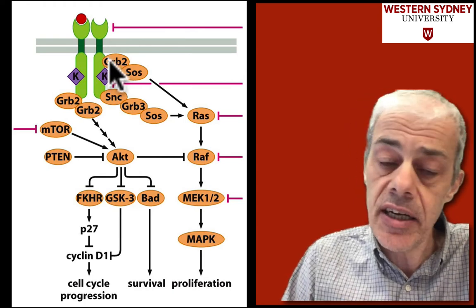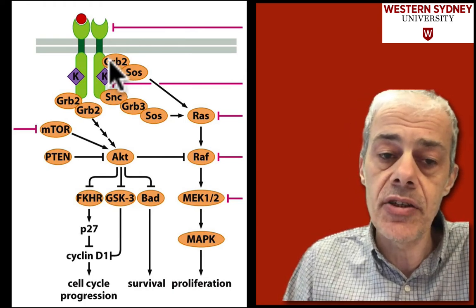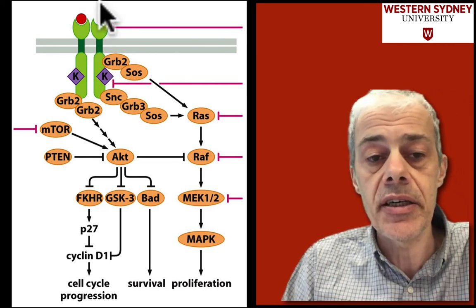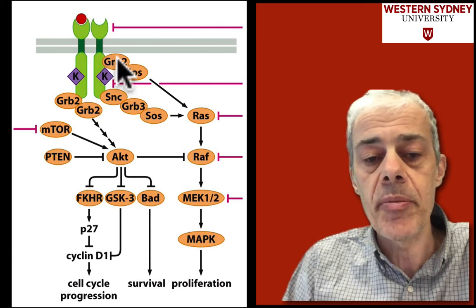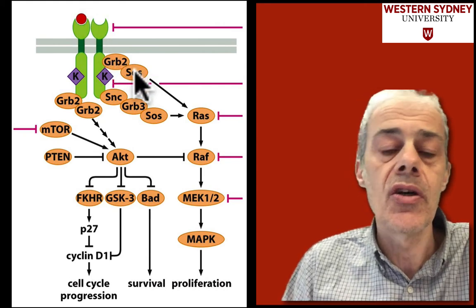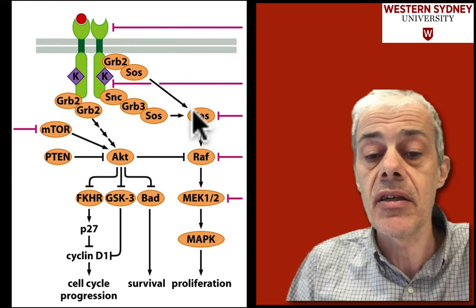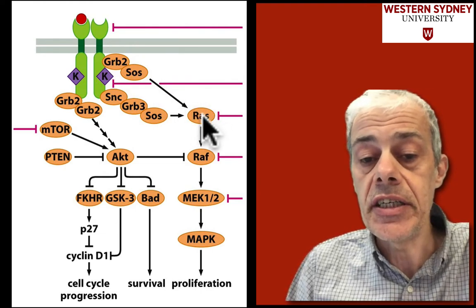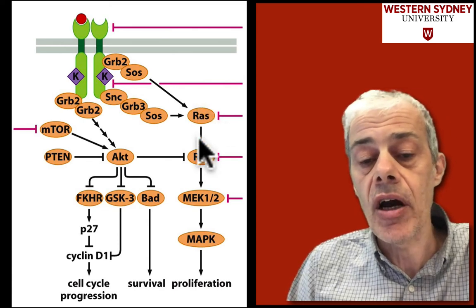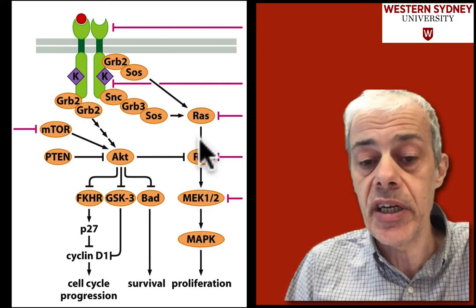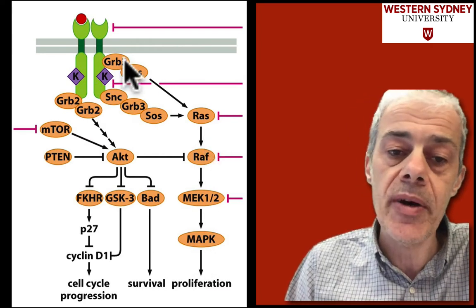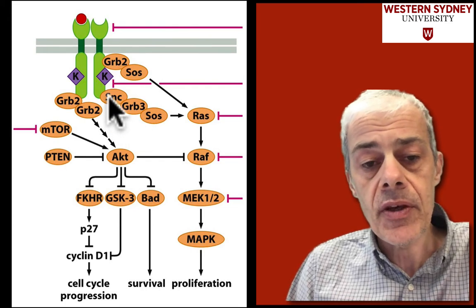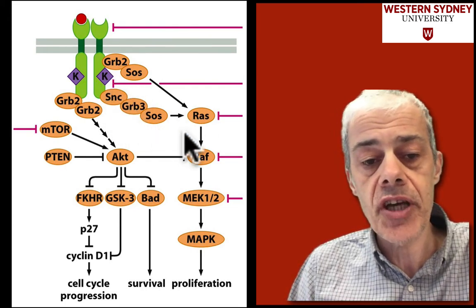The signal passes onto GRB2 and then onto SOS, which is a guanine exchange factor that activates RAS. RAS exchanges its GDP, picks up a GTP, and drives the mitogen-activated protein kinase pathway. There are also other pathways that lead to RAS activation through Shc, and pathways that lead to activation of proteins involved in signaling from phosphatidylinositol.